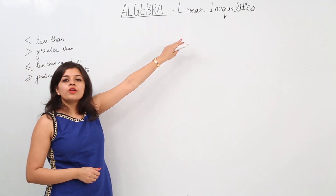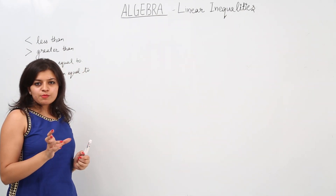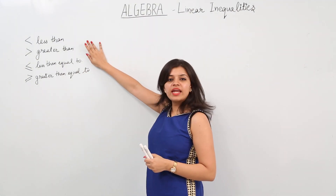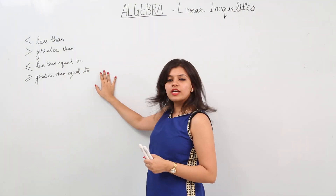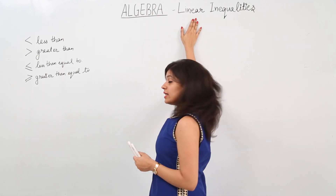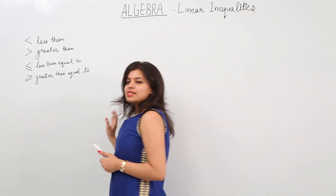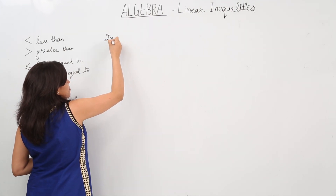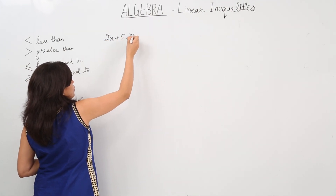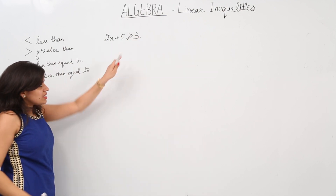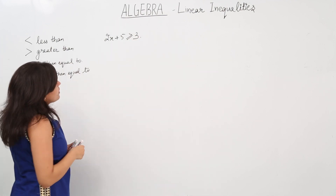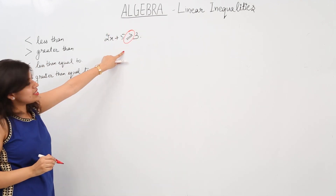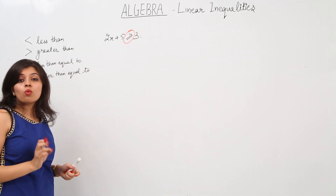What is a linear inequality? Any mathematical expression that uses any of these four symbols — less than, greater than, less than or equal to, greater than or equal to — is known as a linear inequality. For example, 2x plus 5 is greater than or equal to 3. This expression is a linear inequality because of the greater than or equal to sign.